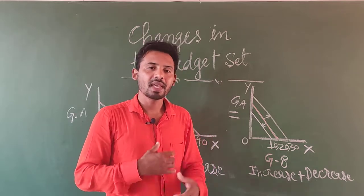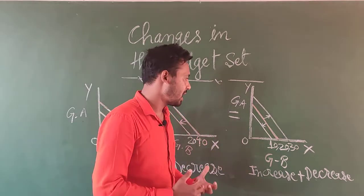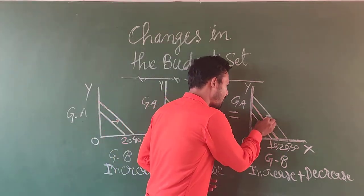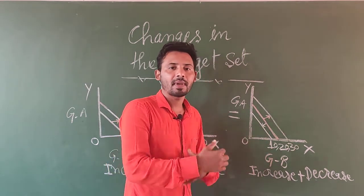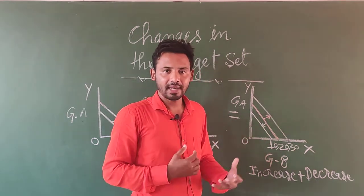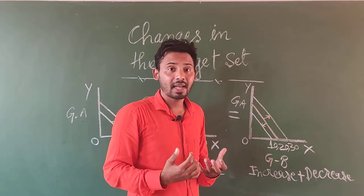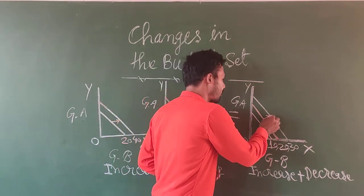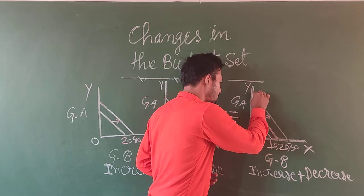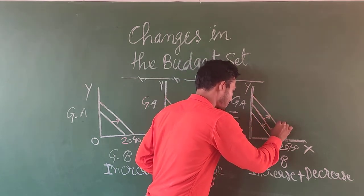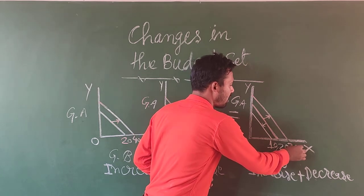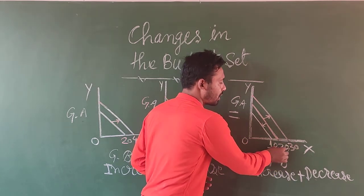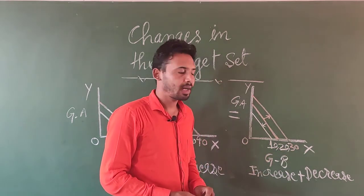Suppose humara 20 rupaiya diya gaya hai aur humara 20 rupaiya increase ho, 10 rupaiya aur add kar diya. Toh humara budget line jo hai woh outward moving ho ga just parallel to the original budget line. Yeh humara increase in budget line hai aur yeh amount jo hai woh 20 se 30 ho gaya hai.